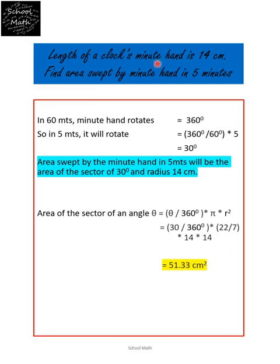Length of a clock's minute hand is 14 cm. Find the area swept by the minute hand in 5 minutes.